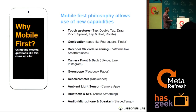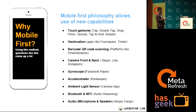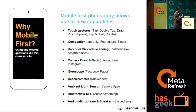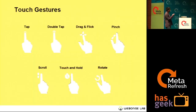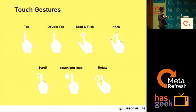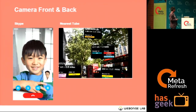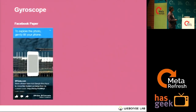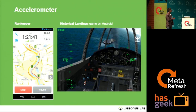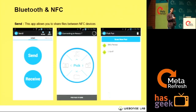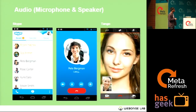Mobile-first philosophy allows us to use new capabilities: touch gestures, geolocation, barcode scanning, camera (front and back), gyroscope, accelerometer, ambient light sensor, Bluetooth, NFC, and audio. For example — geolocation for Foursquare, QR code scanning for Skype, augmented reality for Nearest Tube, Facebook Paper for accelerometer interactions, RunKeeper, and Bluetooth for file sharing.